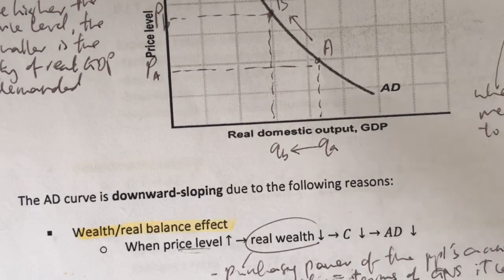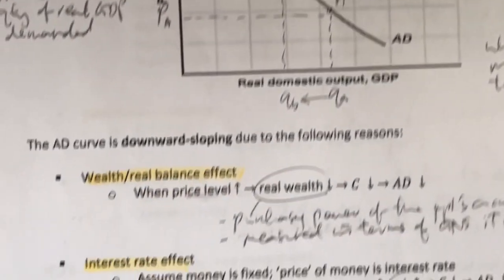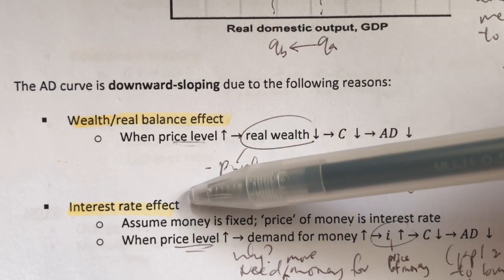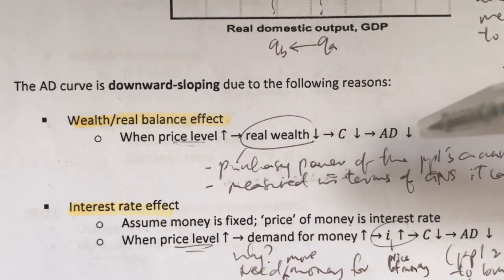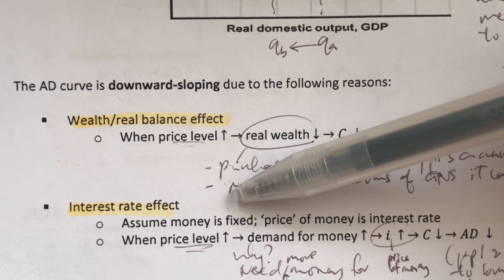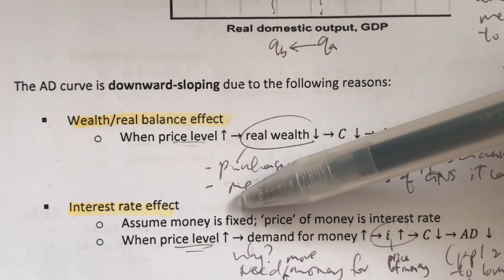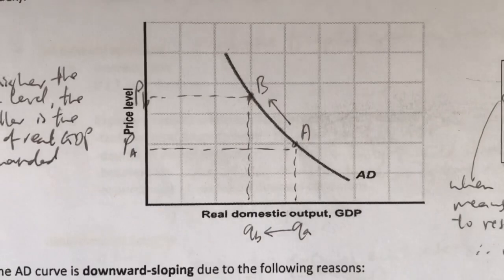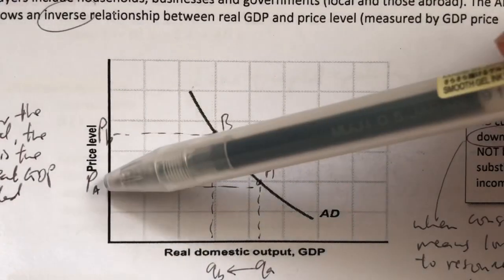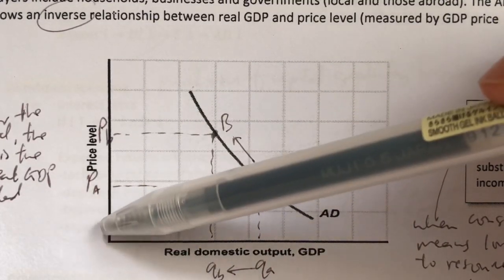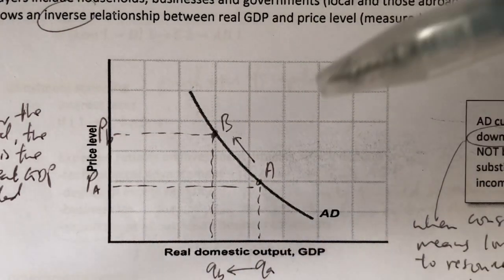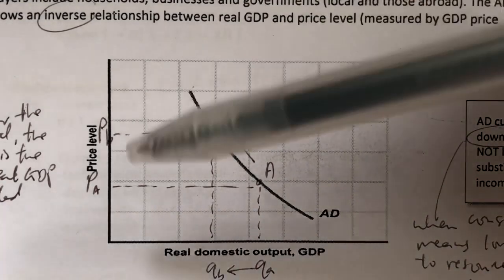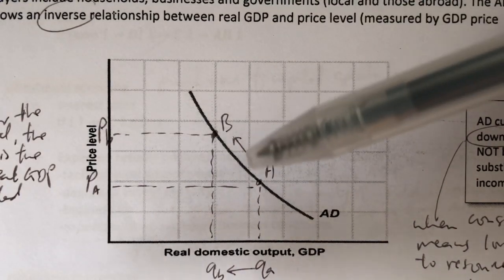Now let's look at the second reason why the aggregate demand curve is downward sloping. The second reason is the interest rate effect. To understand it, we need to assume two things: one, that the supply of money at one point in time is fixed, and two, that the price of money is the interest rate. So when there's an increase in the price level, what it means is we need more money to make purchases. When we need more money compared to the supply of money, there's a shortage of money.